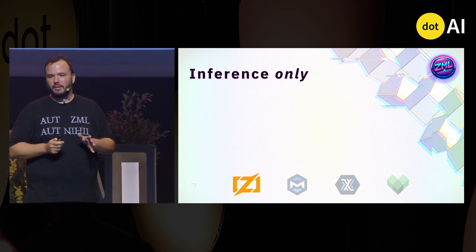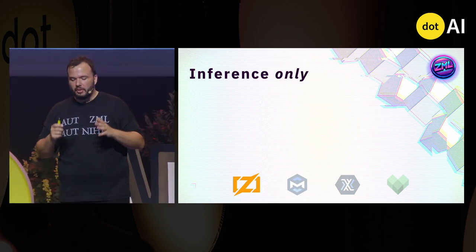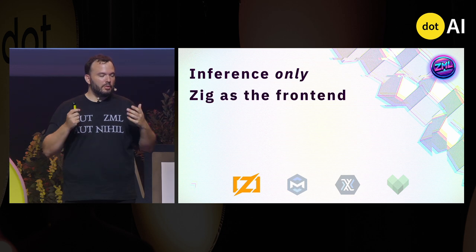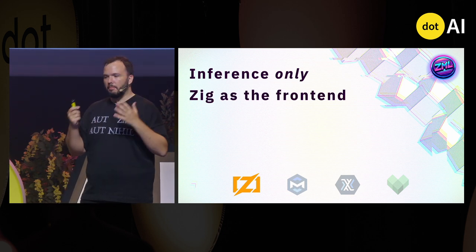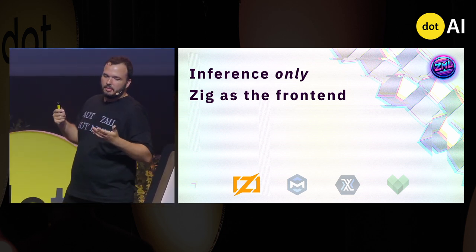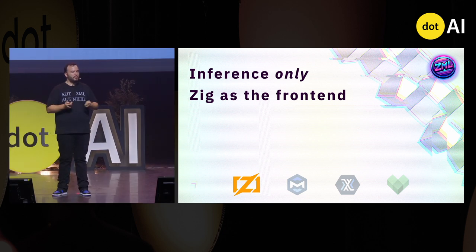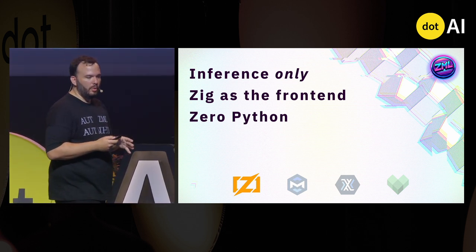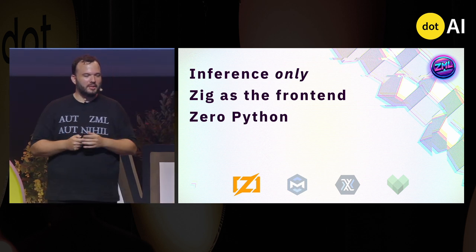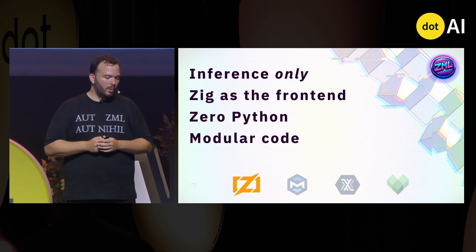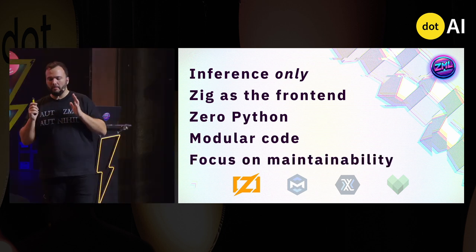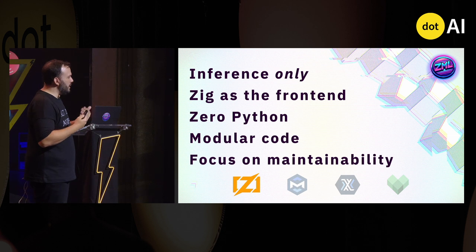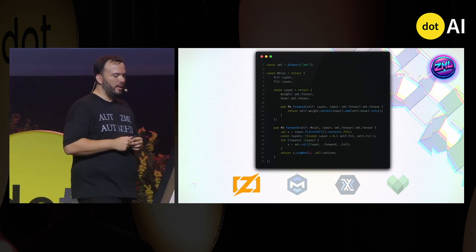We are doing inference only. We may in the future do training, but our focus is production, and we think Python is actually a great tool for that. ZIG is the frontend — we use ZIG to write the models and compile them. There's all sorts of code around the model: integration code, normalizing code, and so on. We have zero Python in the stack. We even have a torch loader rebuilt from the ground up purely in ZIG. What we want is modular code with a strong focus on maintainability. We found that in production, what kills you is not writing the code — what kills you is maintaining the code.